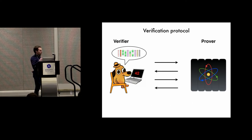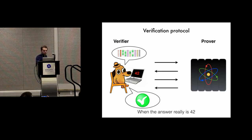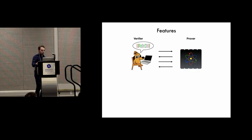Say that we run this protocol and we get some answer — in this case 42. What we want is that when the answer really is 42, the verifier accepts with very high probability; this is the completeness property of our protocol. And when the answer is not 42, it should reject with very high probability; this is the soundness of the protocol. In addition to these parameters, there are also some other features that we might require for this to be useful in practice.